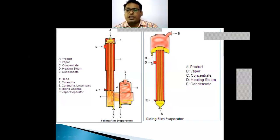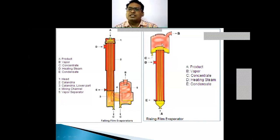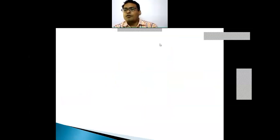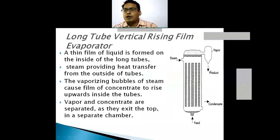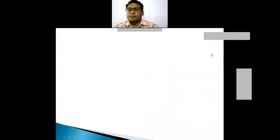In rising film evaporators, the feed is at the bottom, steam inlet is on the shell side, and the condensate exits. The vapor separator is present. This is a single unit consisting of a heat exchanger and a vapor separator; however, the heat exchanger and liquid-vapor separator can also be separate units.